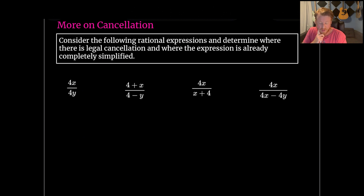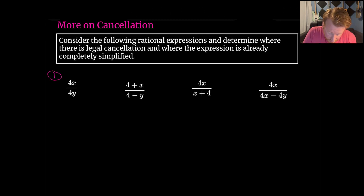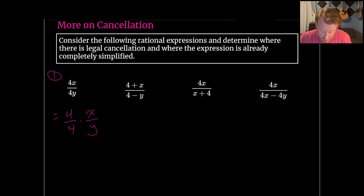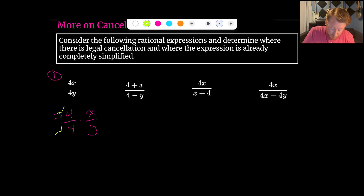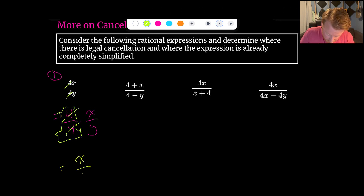Let's look at some more examples of cancellation — which ones allow legal cancellation and which are already completely simplified. The first one: 4x over 4y. We can rewrite this as 4 over 4 times x over y. Four over four is our big dumb one, so there is where the cancellation happens. We're left with just x over y.